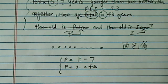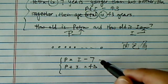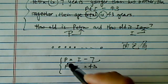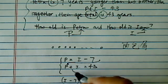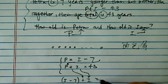So from here 90% of work is done. I'm going to use substitution because it's easier. We're going to substitute P with I minus seven. So I minus seven plus I, that's the second equation, is equal to 43.